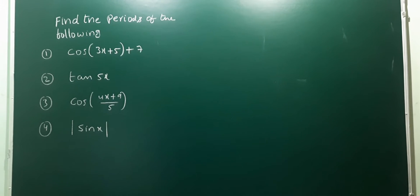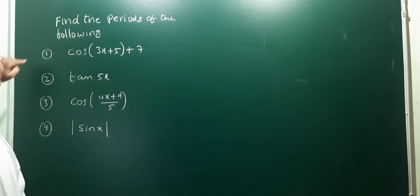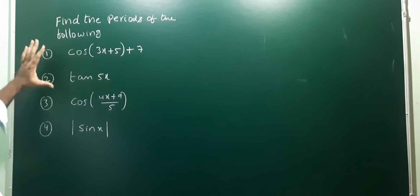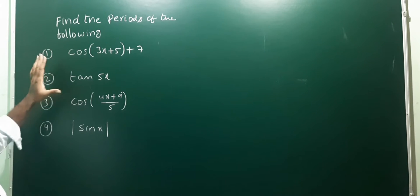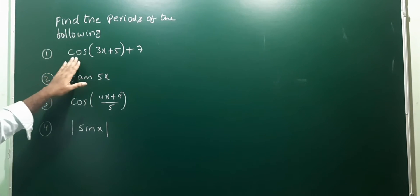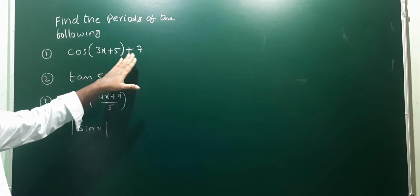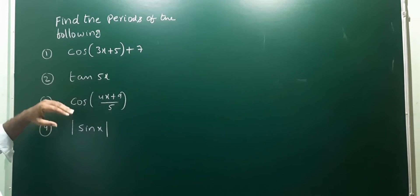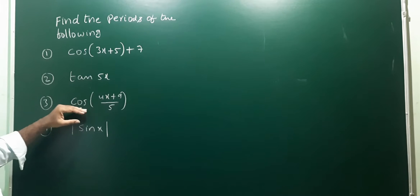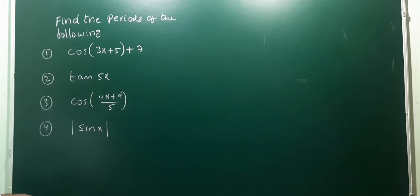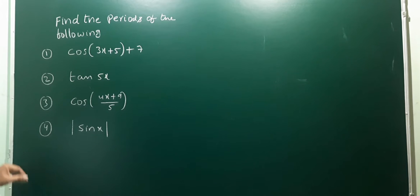Next problem: find the periods of the following functions. First one: cos(3x + 5) + 7. Second one: tan(5x). Third one: cos((4x + 9)/5). Fourth one: modulus of sin(x).